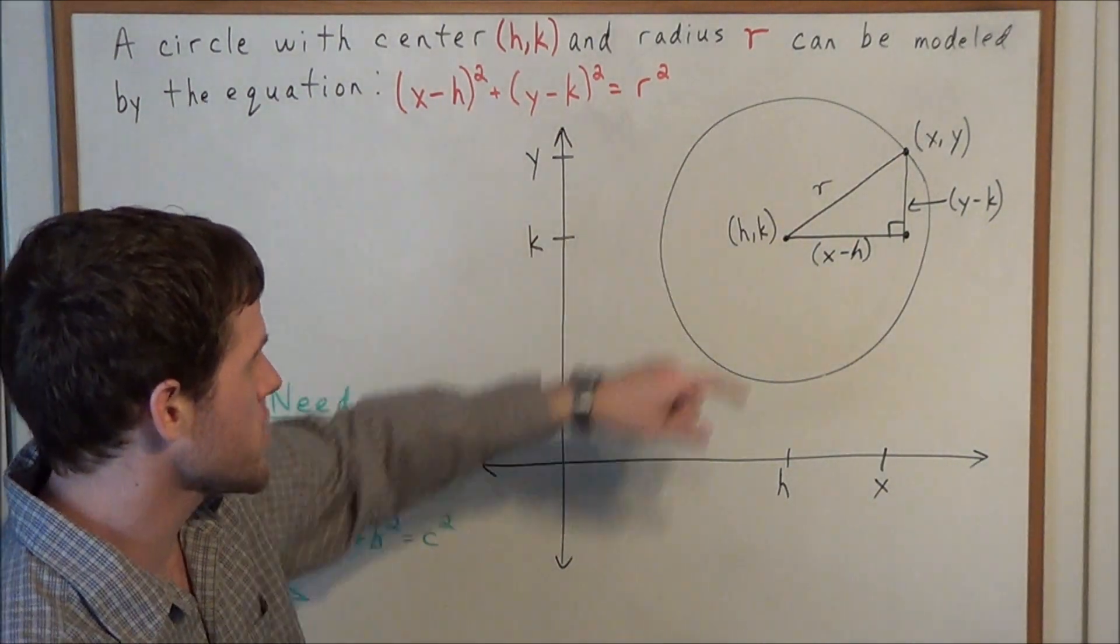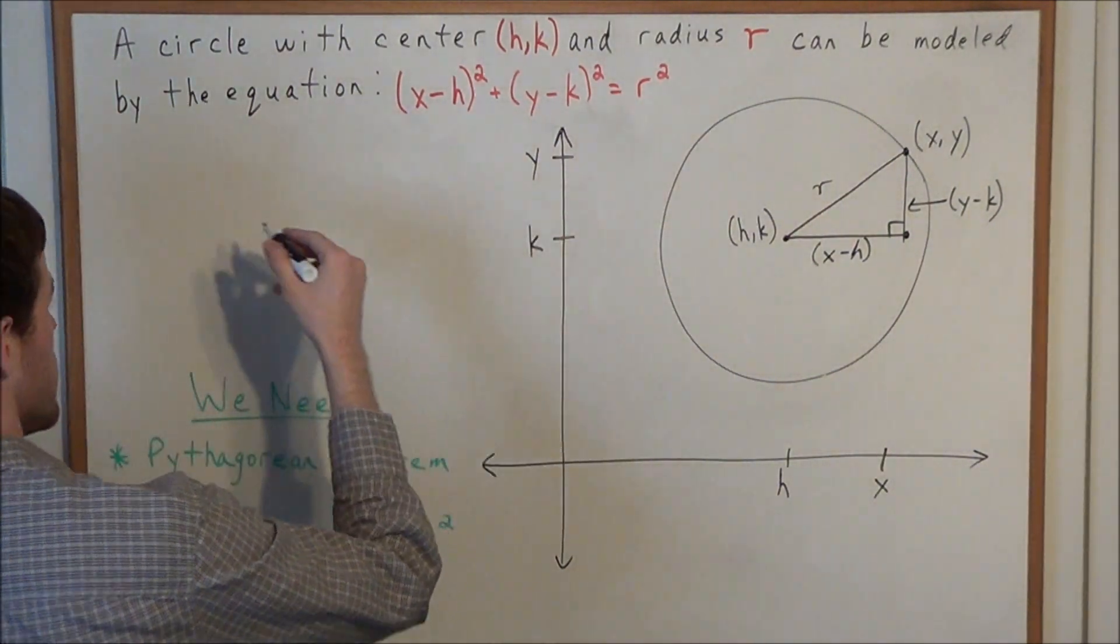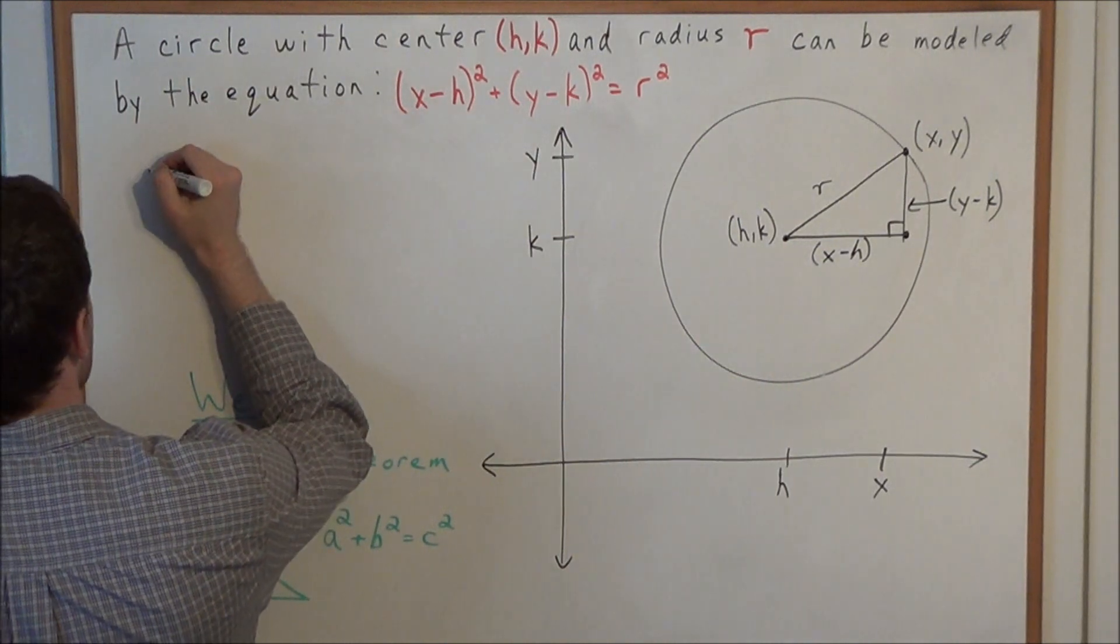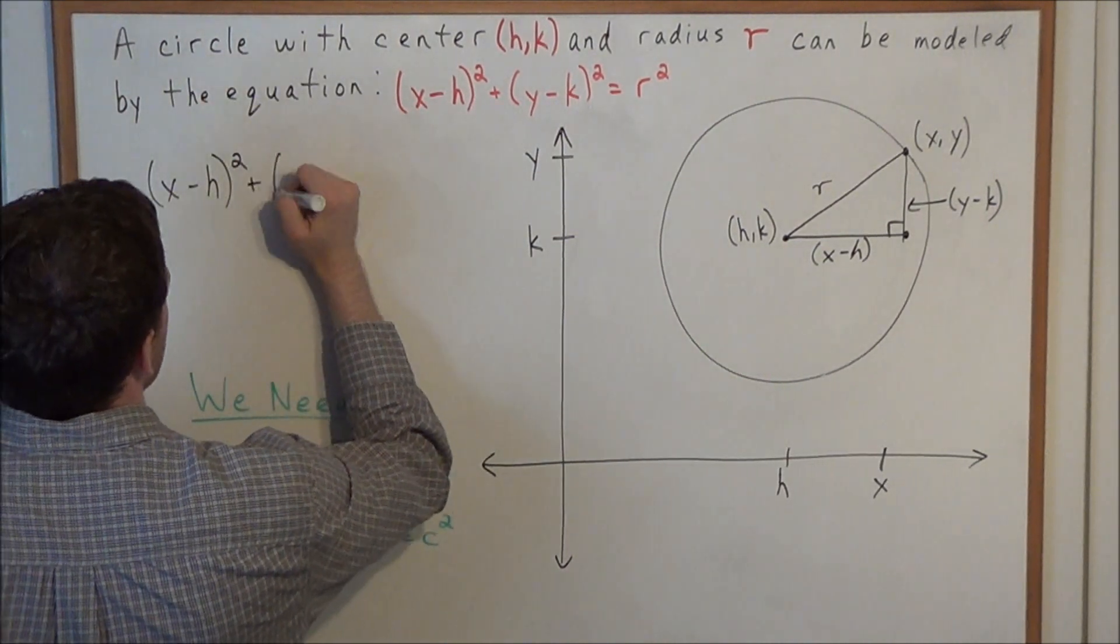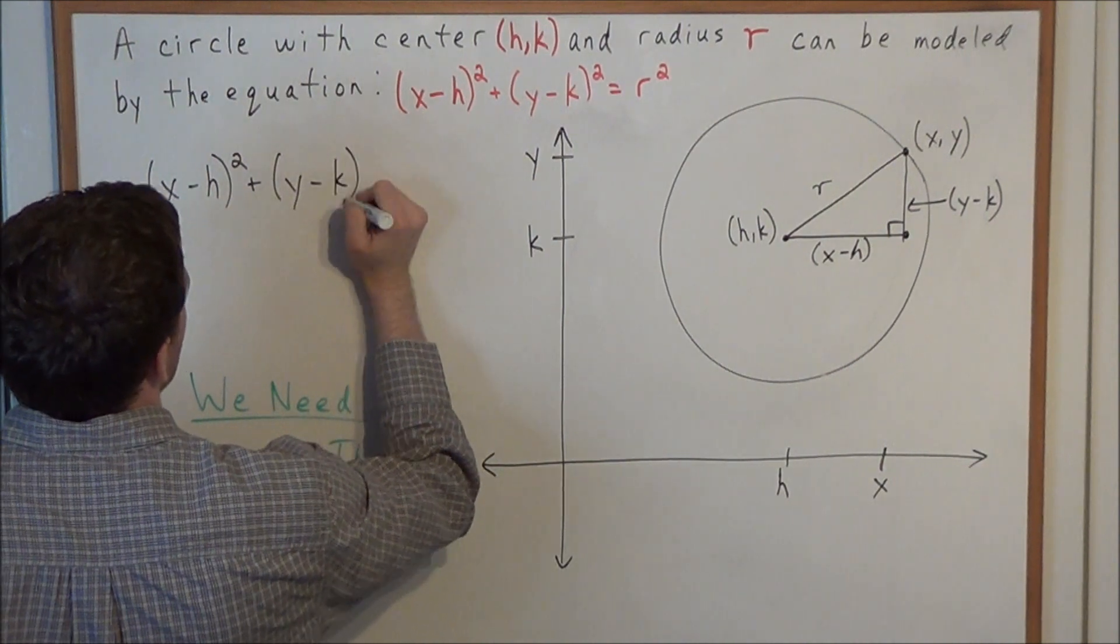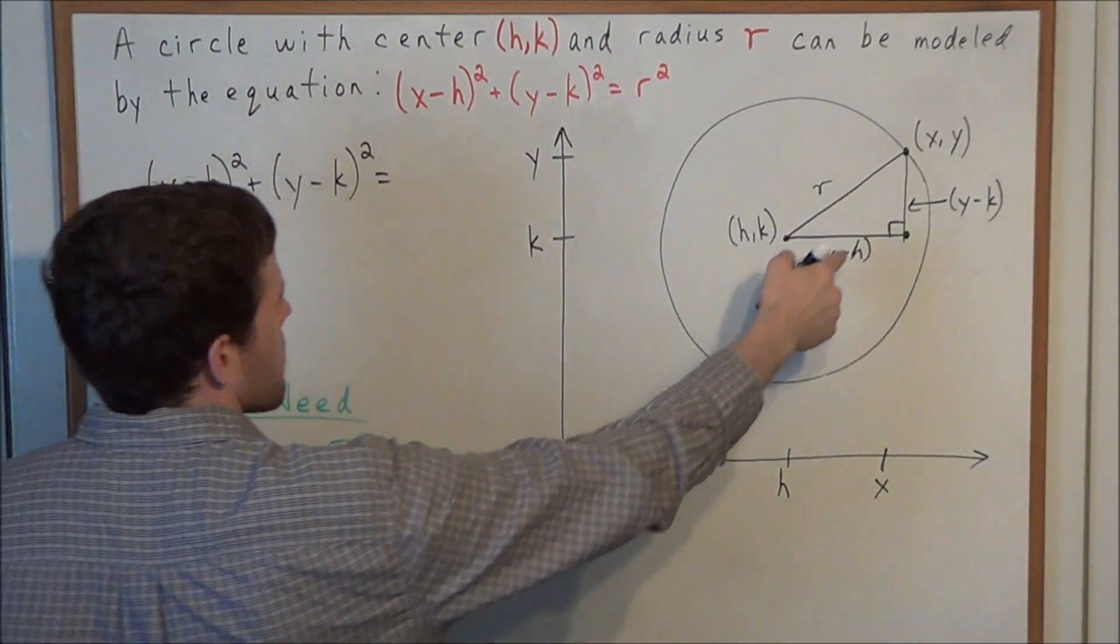So applying that to the right triangle we have in the diagram over there, we have (x-h)² + (y-k)² equals the hypotenuse r².